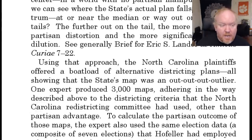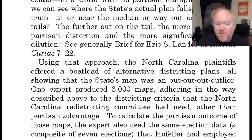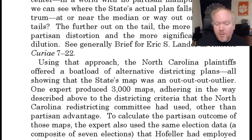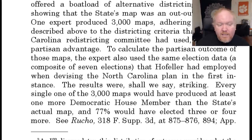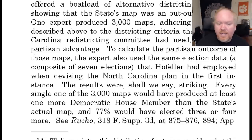Suppose we have a thousand maps, each with a partisan outcome attached. We can line up those maps on a continuum — most favorable to Republicans on one end, most favorable to Democrats on the other — find the median outcome in a world with no partisan manipulation, and see where the state's actual plan falls: at or near the median, or way out on one of the tails. The further out on the tail, the more extreme the partisan distortion. Using that approach, the North Carolina plaintiffs offered a boatload of alternative districting plans, all showing the state's map was an extreme outlier. One expert produced 3,000 maps — every single one would have produced at least one more Democratic House member than the state's actual map, and 77% would have elected three or four more.